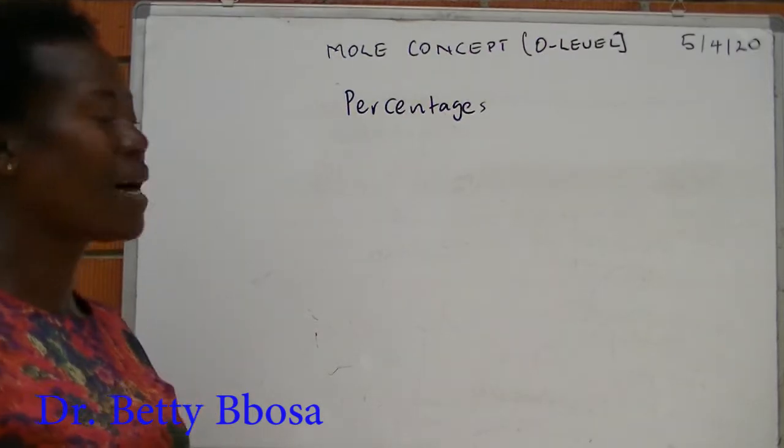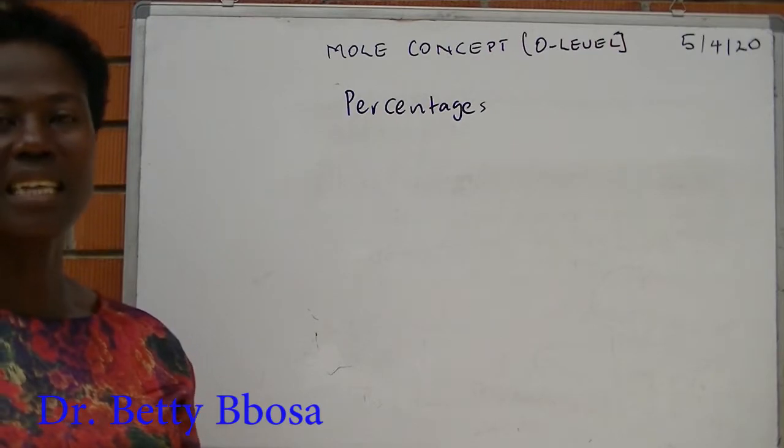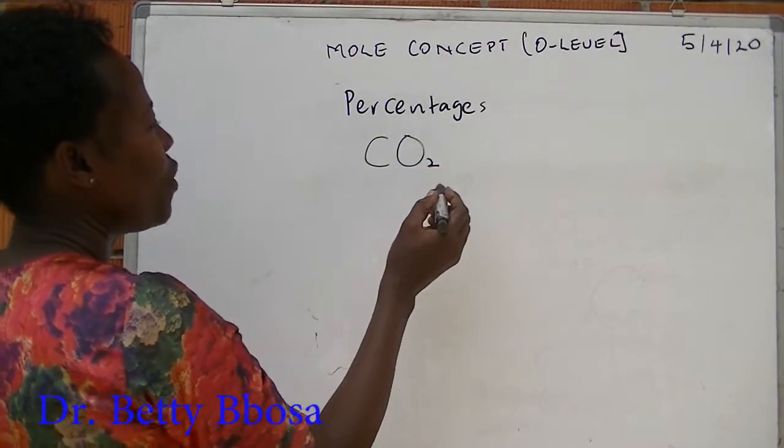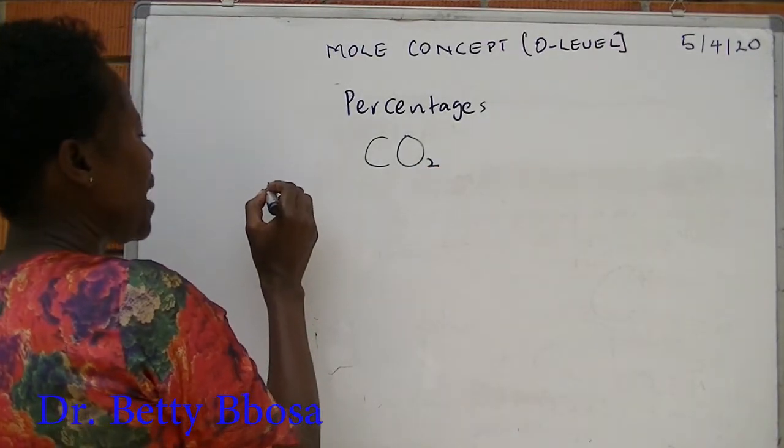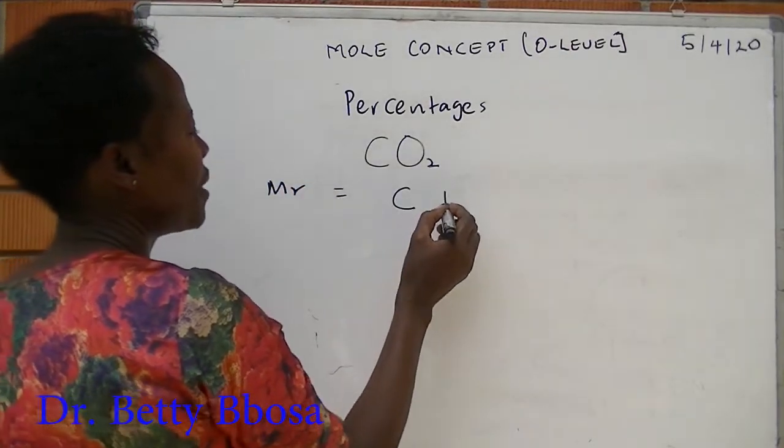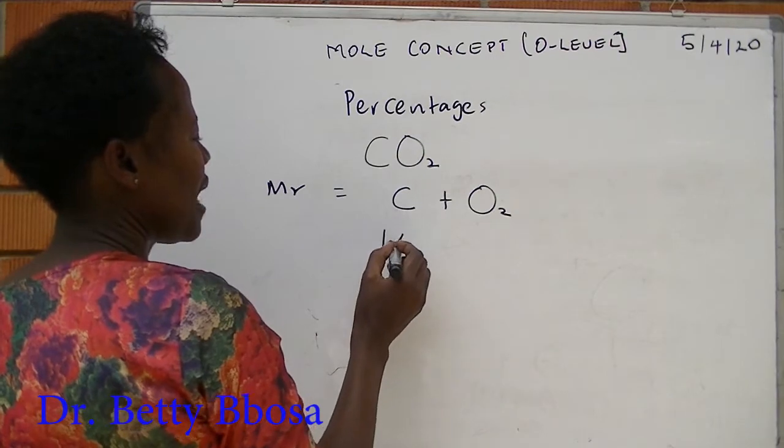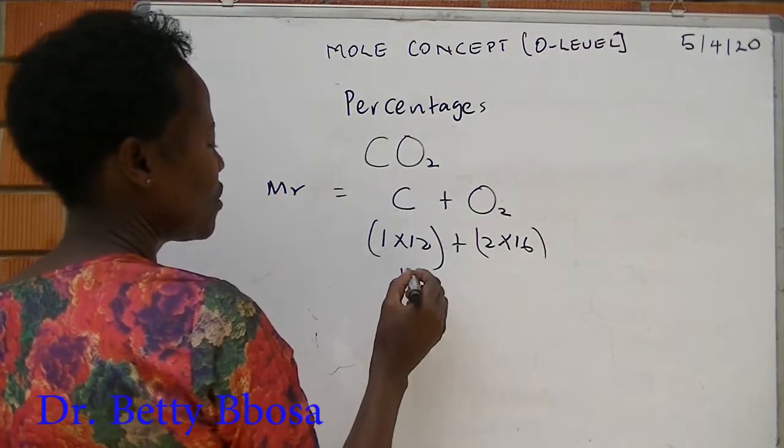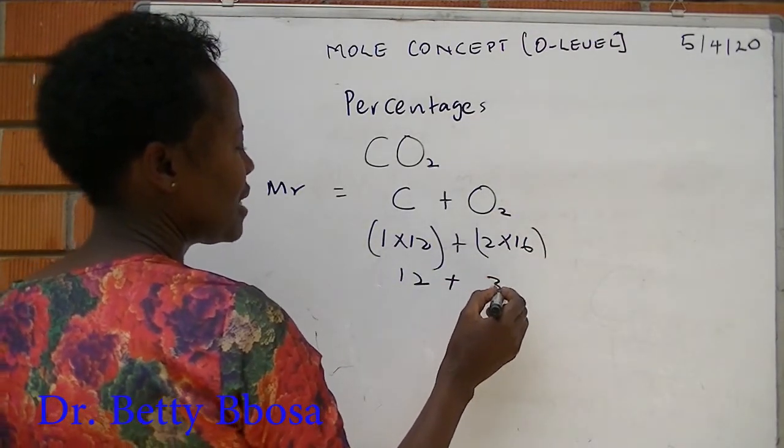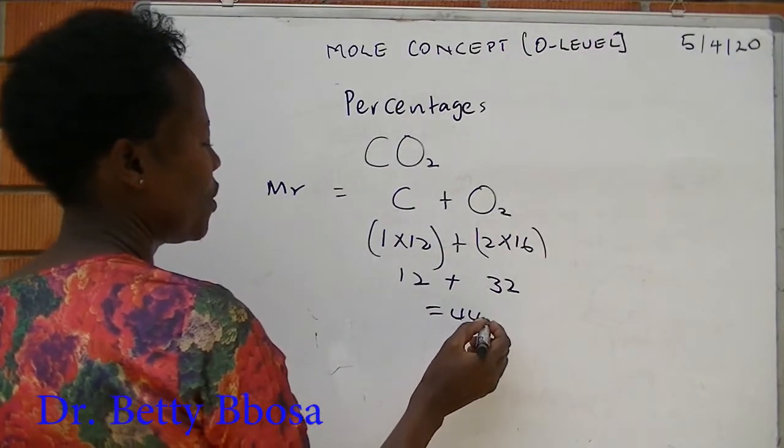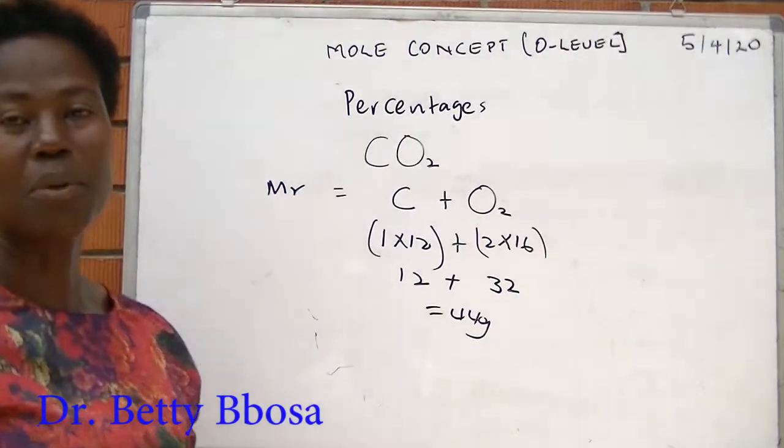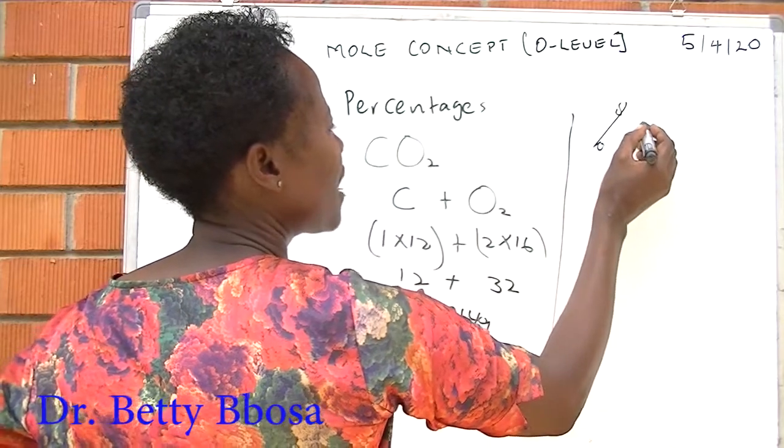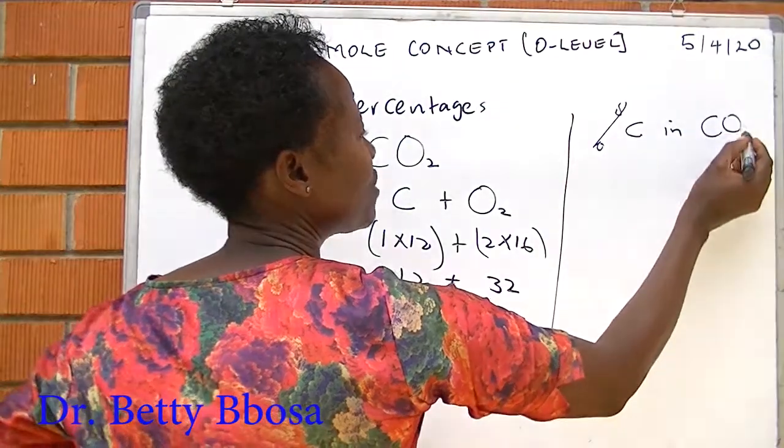The given example we had previously was carbon dioxide where we got our molecular mass as carbon plus oxygen: 1 times 12 plus 2 times 16. This is 12 plus 32, and the answer is 44 grams. So this is the total mass of carbon dioxide. We can as well calculate the percentage of carbon in carbon dioxide molecule.